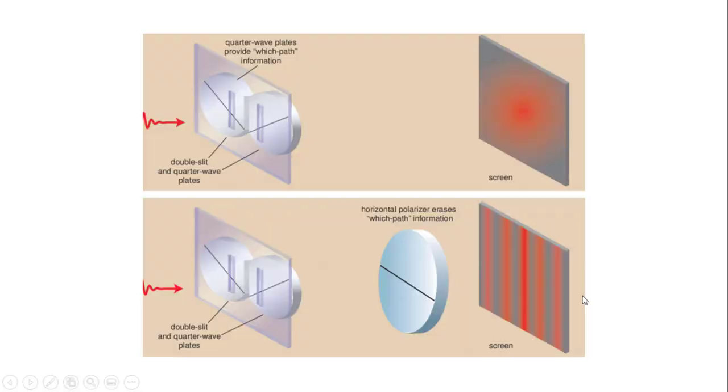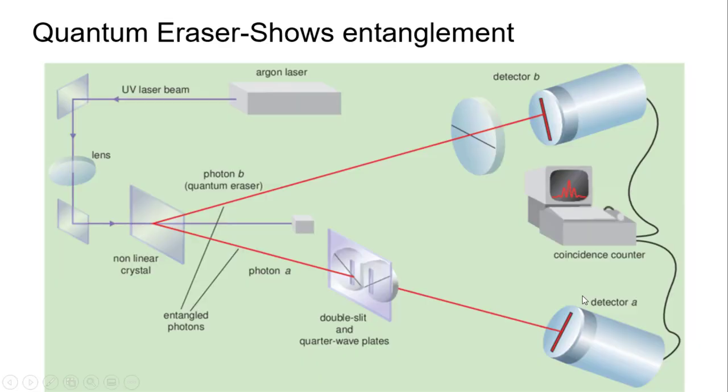And there's a newer experiment called the quantum eraser where they even do this with information, which actually shows entanglement between particles. They shoot a laser, it goes through the lens, and then it hits a crystal. That crystal takes the one photon and splits it into two different photons.